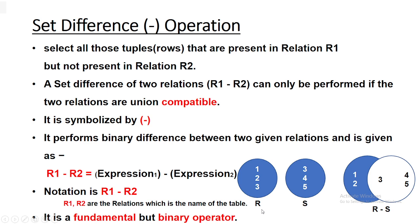The set difference operator is symbolized as a hyphen or dash. It performs a binary difference between two given relations and is written as R1 minus R2, or in notation: expression1 minus expression2.